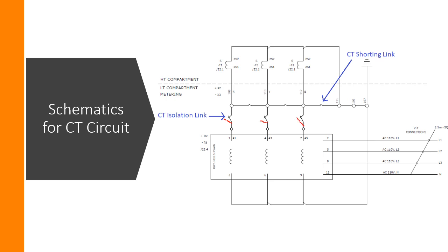Before energization, make sure the isolation links are in the closed position. If the shorting link has not been removed, what will happen is that current from the CT will go back through the link. So before commissioning, the isolating links must be closed and the shorting strip or shorting facility must be disconnected from the terminals. These two actions must be done before energization.